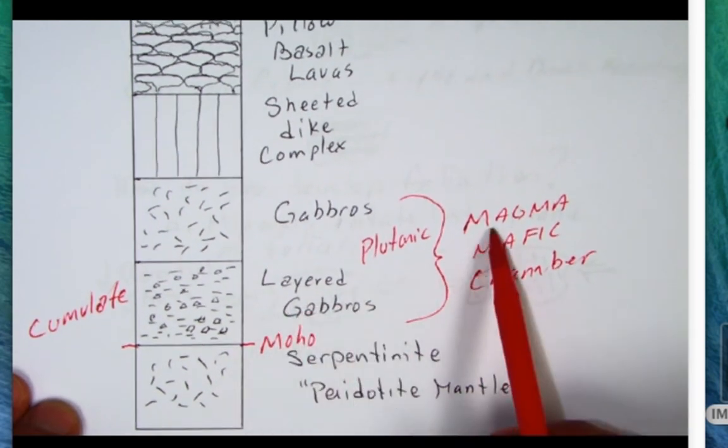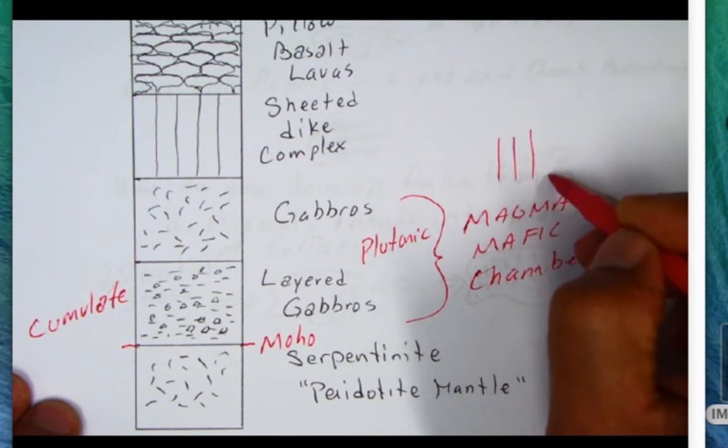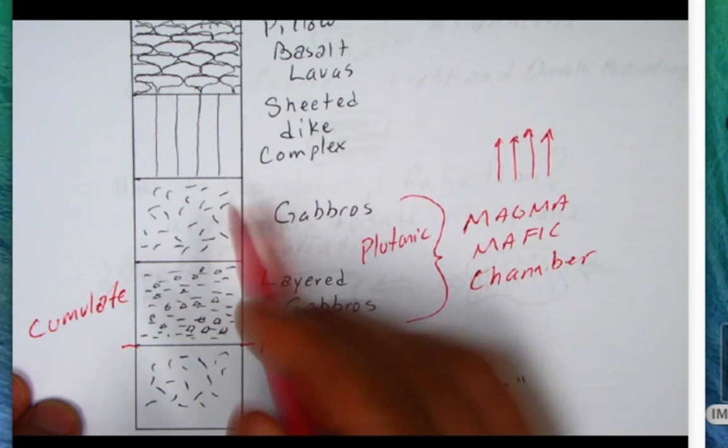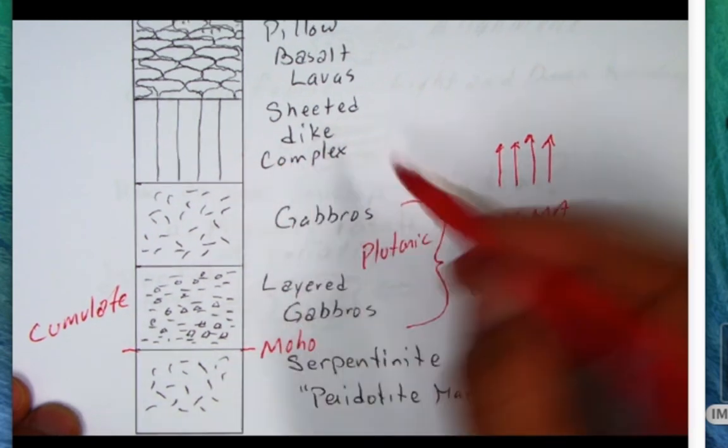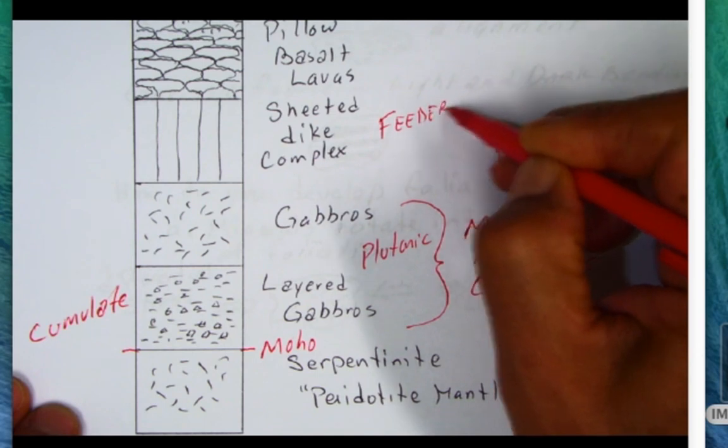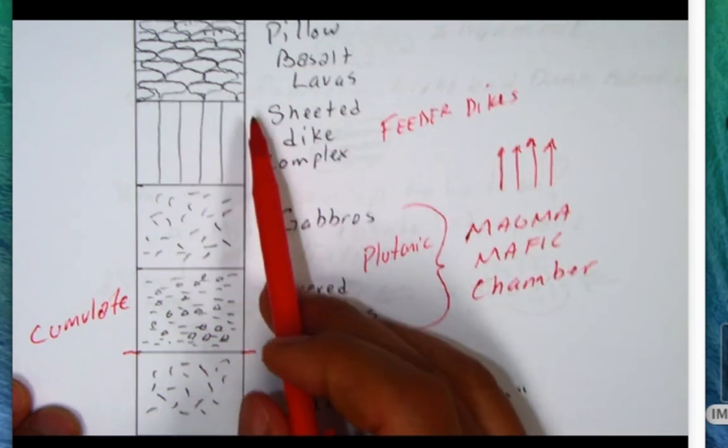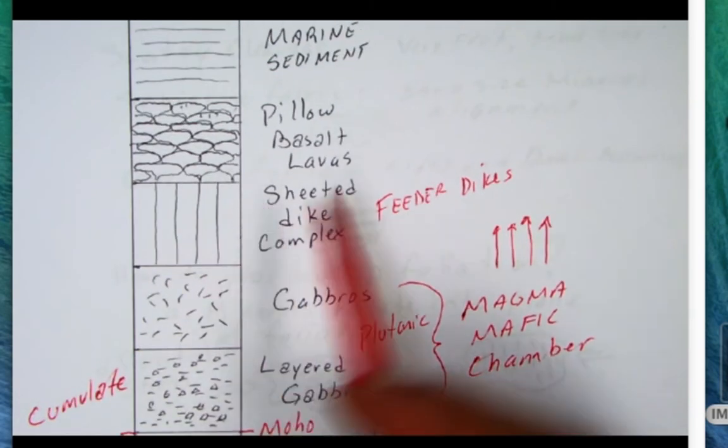If these are magma chambers, the magma chambers must feed lava to the volcanoes at the surface, and that's what the sheeted dike complex is. These are the feeder dikes, so we have magma that is moving from these magma chambers up to the volcanoes and they're erupting as pillow basalt lava.